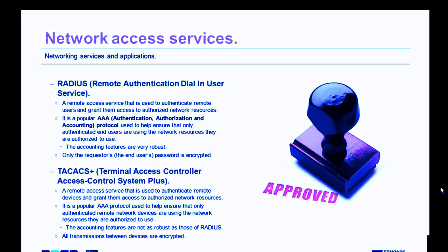RADIUS is a popular AAA protocol — that's Authentication, Authorization, and Accounting Protocol. It's used to help ensure that only authenticated end users are using the network resources they are authorized to use. The accounting services of RADIUS are very robust. The only drawback to RADIUS is that only the requester's — the end user's — password is encrypted; everything else gets sent in the clear. Terminal Access Controller Access Control System Plus, or TACACS+,